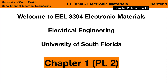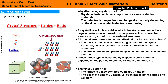Welcome to Electronic Materials. This video covers the second half of Chapter 1. So far we talked about bonding between atoms and tried to get an idea of the thermal energy in particles and atoms. That allowed us to determine whether a bond is stable or not. Now the next step is to discuss what happens when many atoms come together and form crystals.